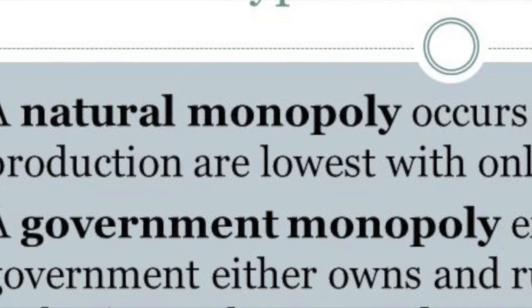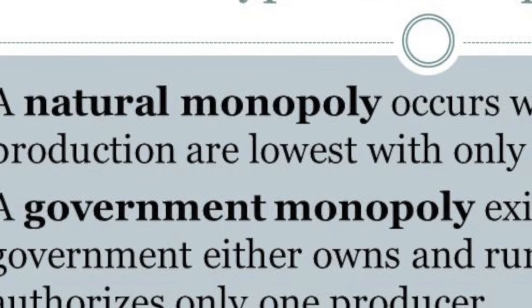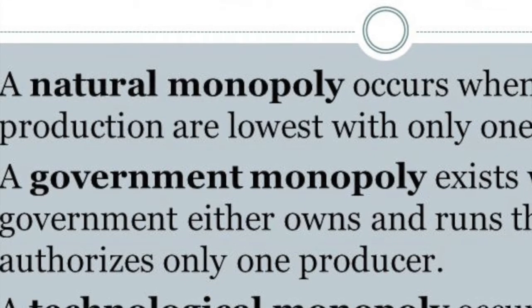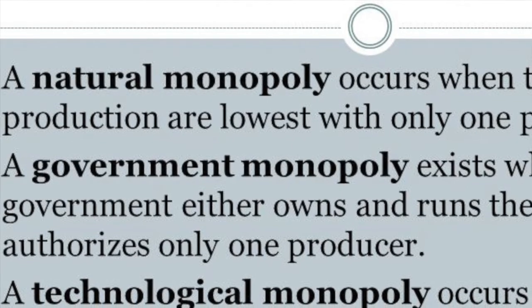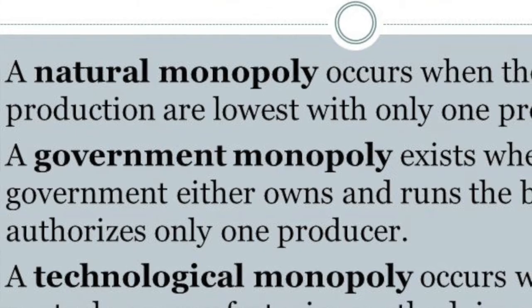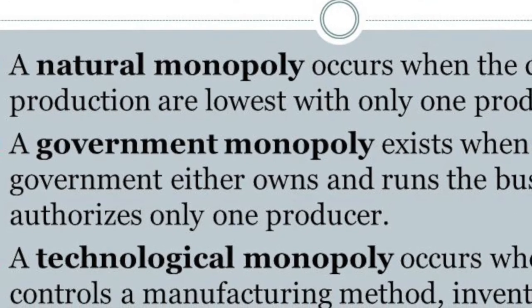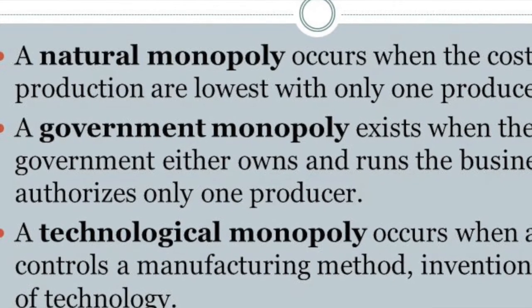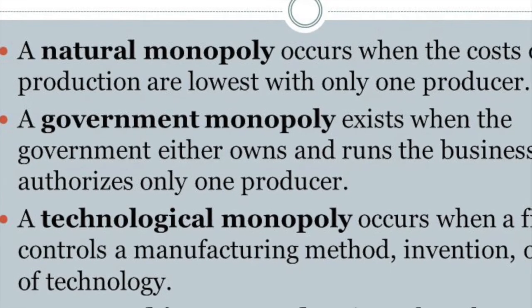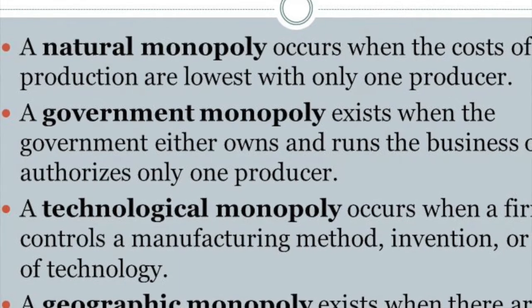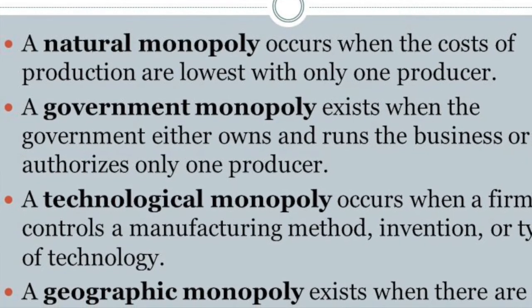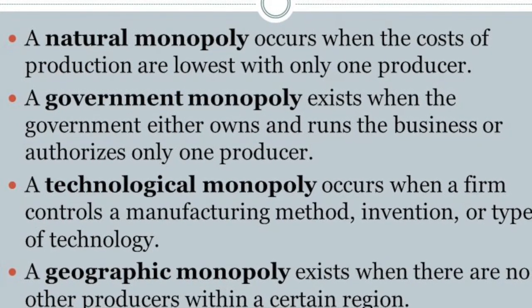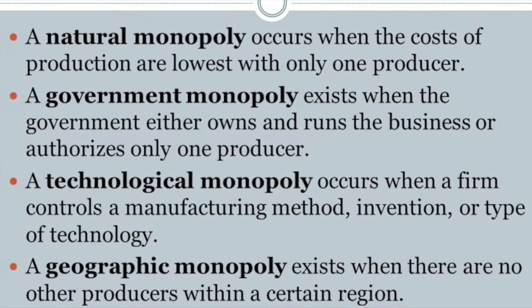You also have geographic monopolies, where there are no other producers in that region — like the only gas station around, the Valero by Decatur High School by the train tracks. If you're going to Edgewood, that's the only gas station you'll see for a while. A natural monopoly occurs when the cost of production is lowest with only one producer, like a utility company or water power. They get away with this based on economies of scale — reduced costs per unit that happen when increased total output is cheaper. If it's a government-sponsored monopoly, they pass those savings along to buyers. That's why your water bill is not ridiculously expensive.